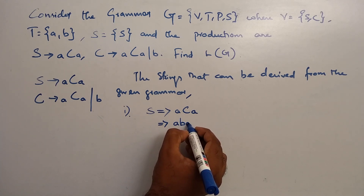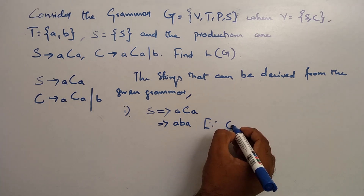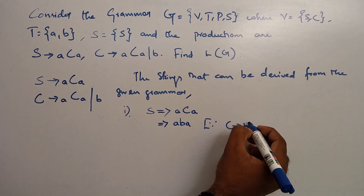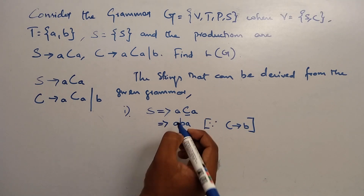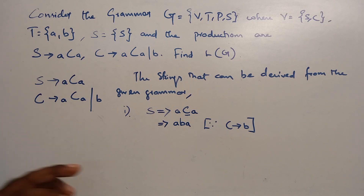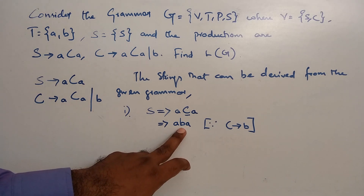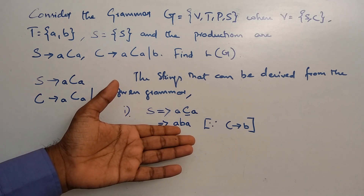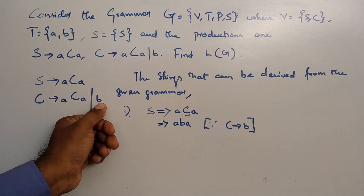We start with S, which gives A C A. Since C tends to B, we replace C with B. So the minimum length string we can derive is A, B, A. The first substitution gives A C A, and if we substitute C with B, we get ABA.